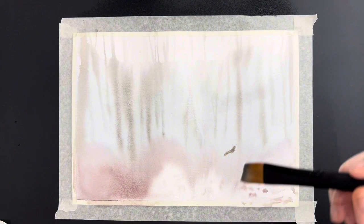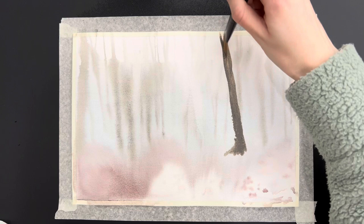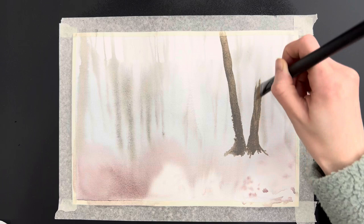Here I've switched to a Royal and Langnickel Essentials brush. This is to paint in the trees. It's an angled brush and I find it works really well to block in those defining shapes because the bristles are a little bit stiffer and the shape of it is just perfect.